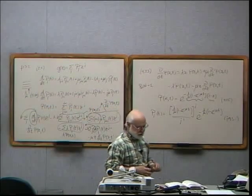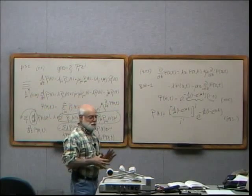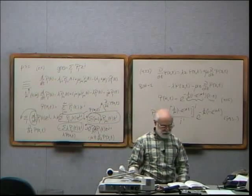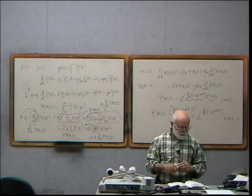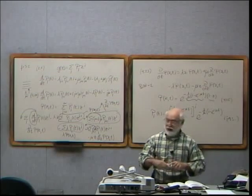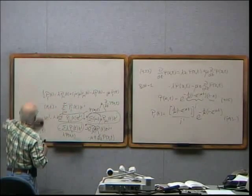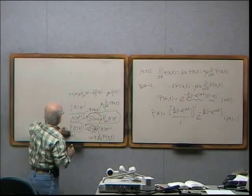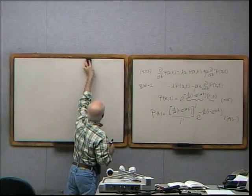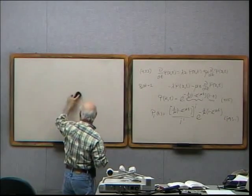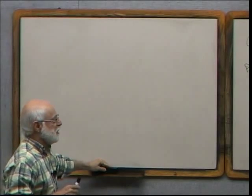Now we're ready to move on to the next topic. I recommend reading section 5.5 in the book starting on page 192. I first learned about generating functions from the famous textbook by Feller — 'An Introduction to Probability Theory and Its Applications' — originally written in the 1950s, which popularized generating functions for non-negative integer-valued random variables.